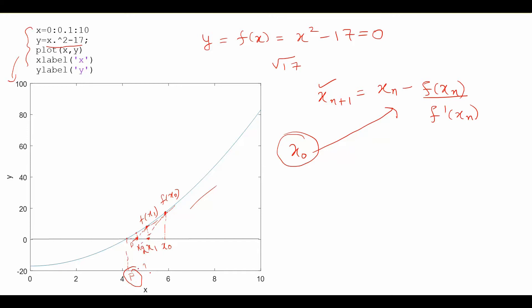You can see that the rate of convergence is very fast — it has a second order of convergence, which is faster than the bisection method. So it converges faster than the bisection method, but you must be careful about the choice of x₀. Sometimes if you choose x₀ very far away, the Newton-Raphson formula may not converge.